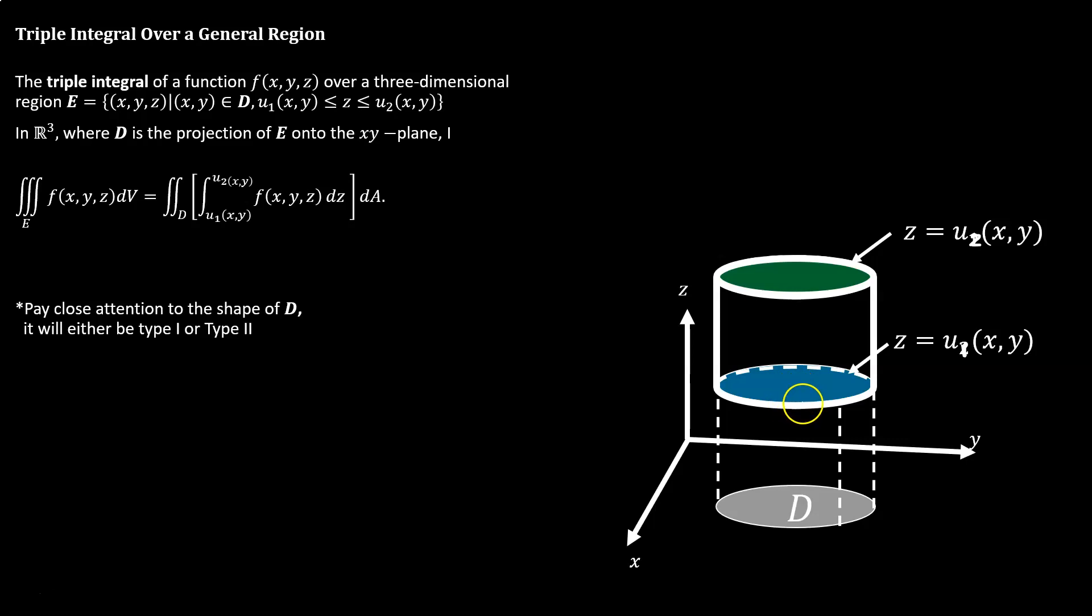But then when we set up the third integral, we're integrating between these z values. If we look at our definition here, this is the new part that we're sticking inside of our old double integral. We used to integrate over two independent variables, over some area partition.